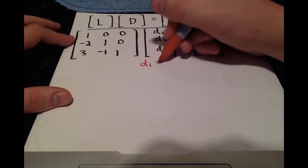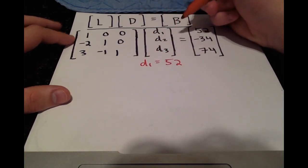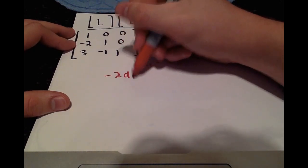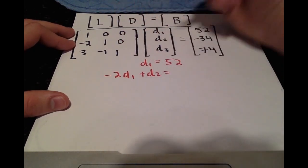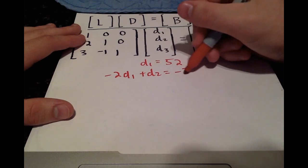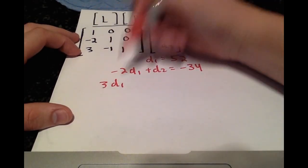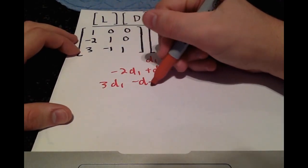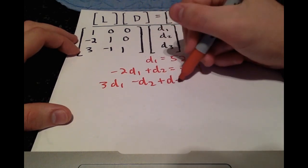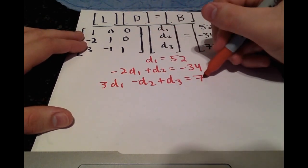And we'll get d1 equals 52. Negative 2 d1 plus d2 is equal to negative 34. Then we'll have 3 d1 minus d2 plus d3 equals 74.